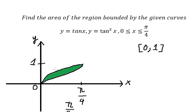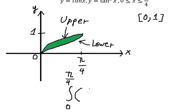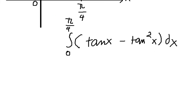So tan x is the upper function and tan²x is the lower function. We need to use upper minus lower, and you get tan x minus tan²x.